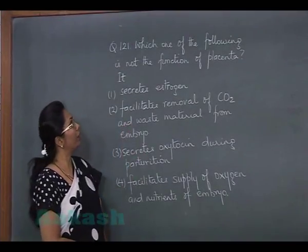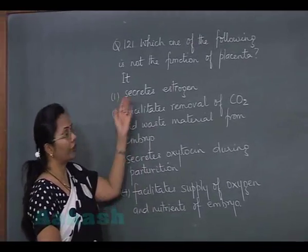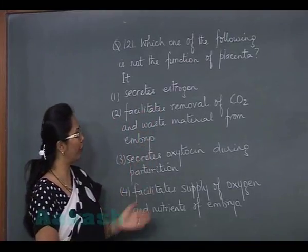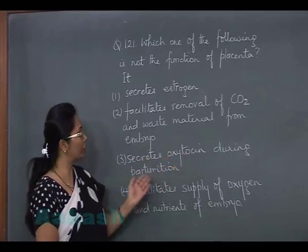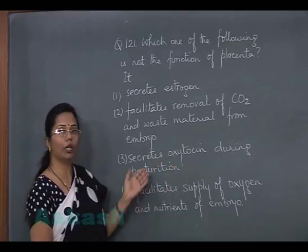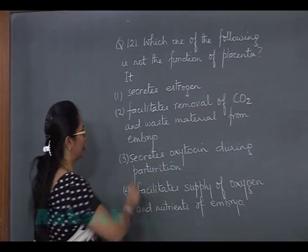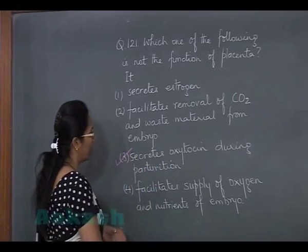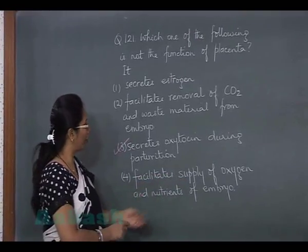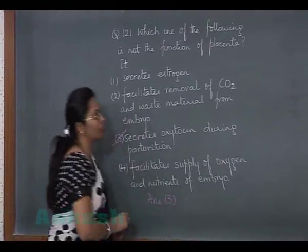Question 121: Which of the following is not the function of the placenta? It secretes estrogen, facilitates removal of CO2 and waste material from the embryo, secretes oxytocin during parturition — this option is incorrect because oxytocin is secreted by the hypothalamus and released from the posterior pituitary at the time of parturition. It also facilitates supply of oxygen and nutrients to the embryo. So the only incorrect answer is option 3.